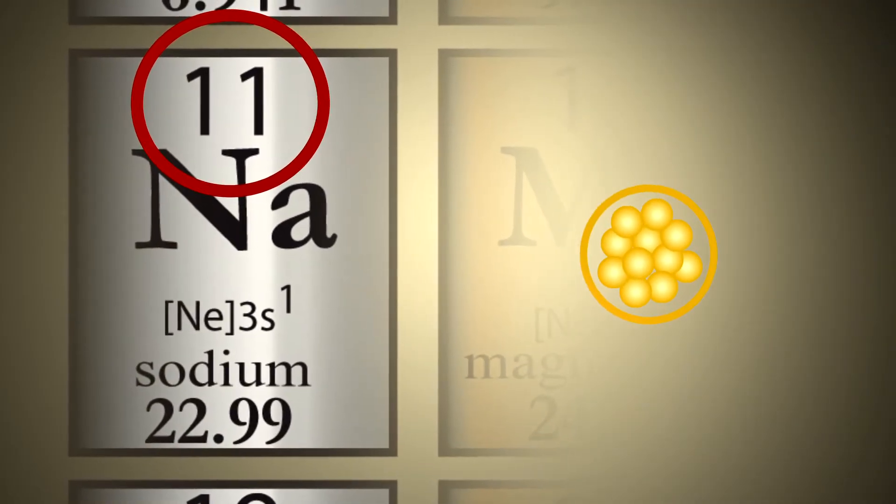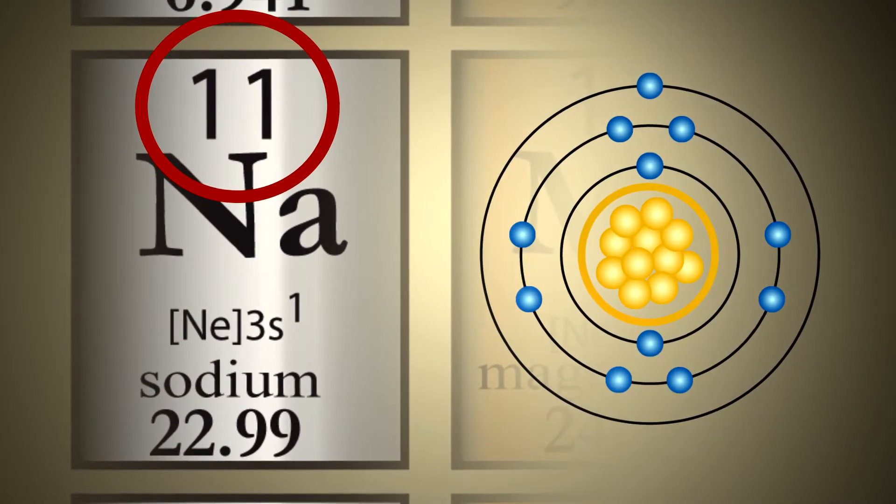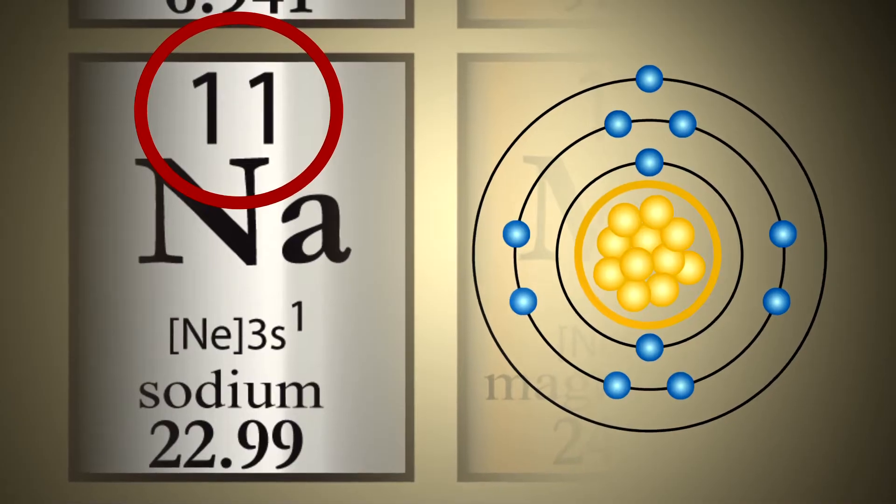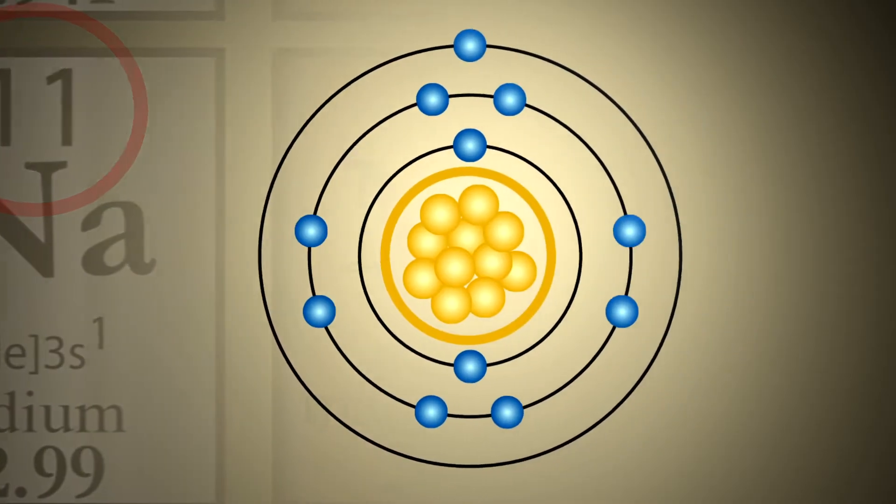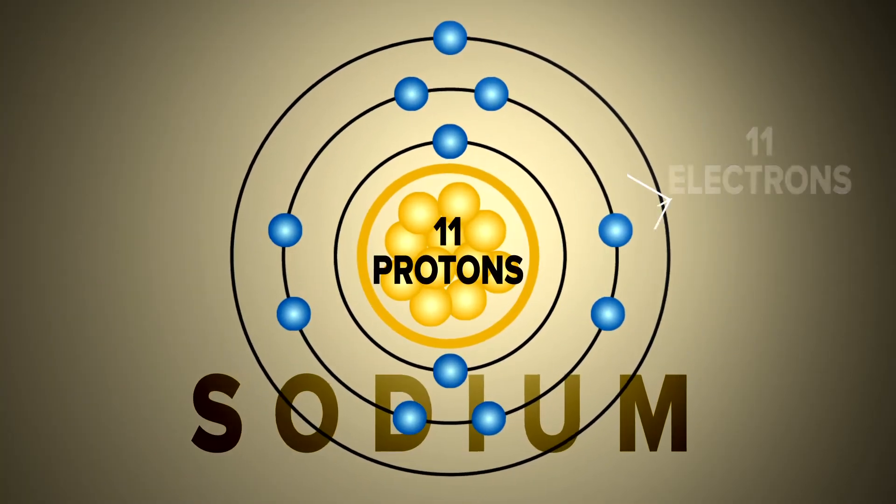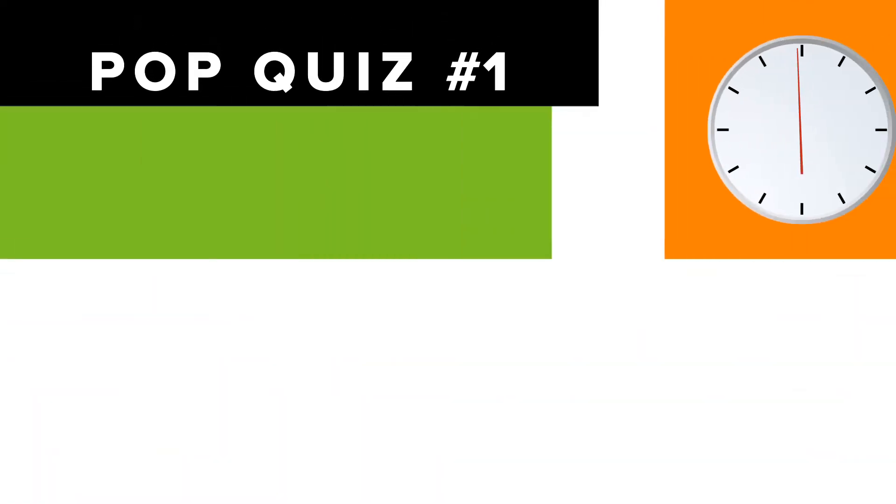The atomic number also tells you how many electrons there are. Individual atoms of every element have the same number of protons and electrons. So, a sodium atom has 11 protons, 11 electrons. All right, pop quiz number one.